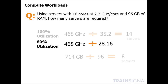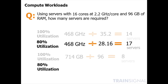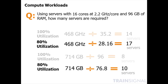At 80% utilization, we're looking at 28.16 gigahertz per server — obtained by taking 35.2 and multiplying by 80%. Using these numbers, we come out at 16.6 servers, which we round up to 17 hosts. Similarly, looking at 80% memory utilization, we divide not by 96 but by 76.8, which gives us approximately 9.3 hosts. We round that up to 10 hosts to satisfy our requirements.